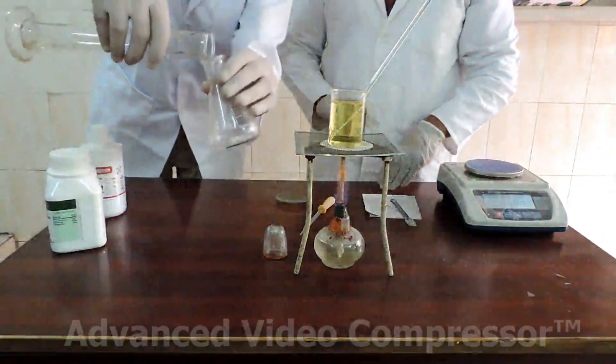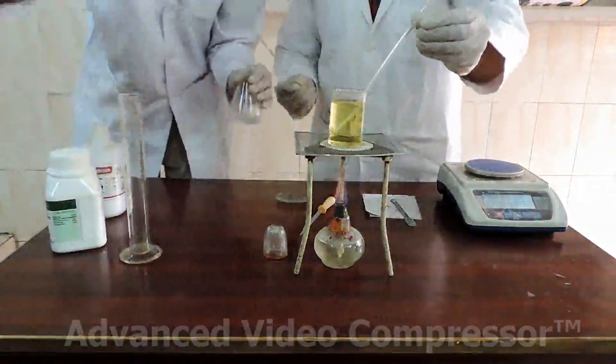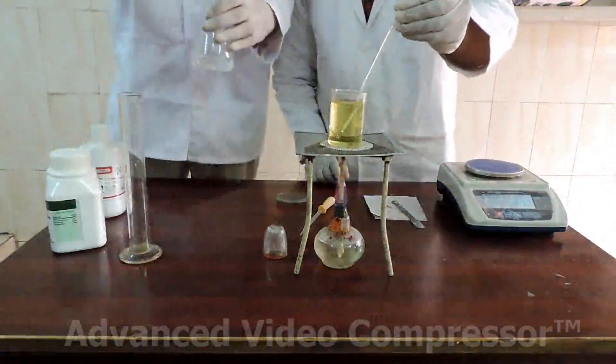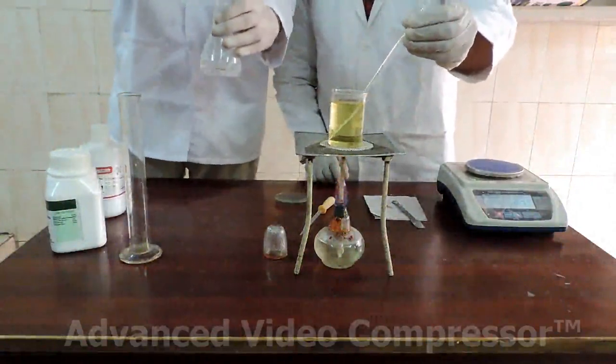Now we add ethanol into potassium hydroxide and stir it thoroughly. We check the temperature of the oil which is 60 degrees Celsius.